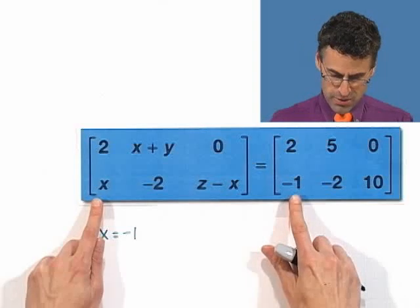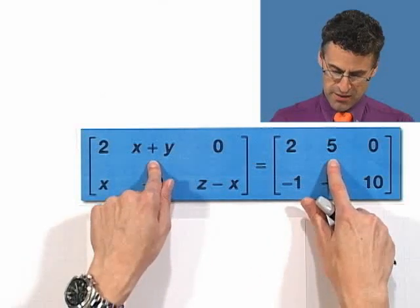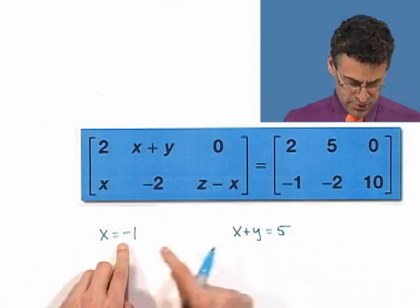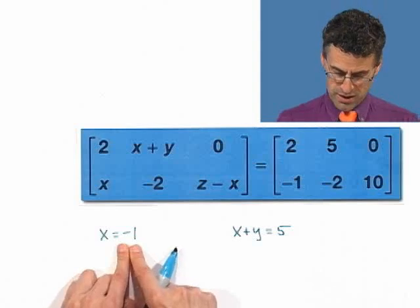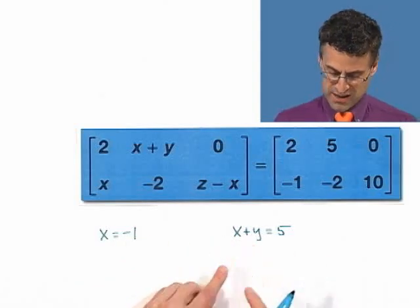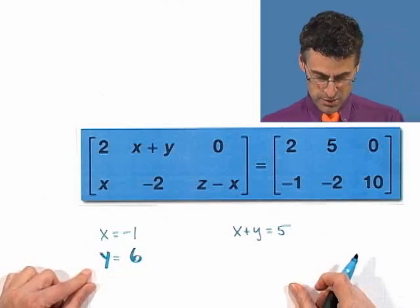And then what do I know here? I know that X plus Y has to equal 5, so X plus Y has to equal 5. You already told me that X equals negative 1, so I put a negative 1 in here for that. I can add 1 to both sides and see Y has to equal 6. So Y must equal 6.